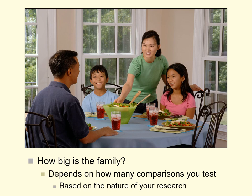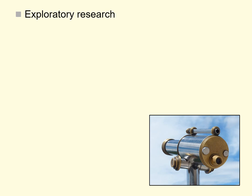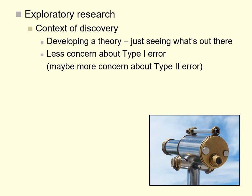The answer is: it depends on the nature of the research. Recall the distinction between exploratory and confirmatory research. Exploratory research is conducted in a context of discovery — where there isn't a good literature of previous findings or well-developed theories. We're looking to see what we can see, maybe trying to develop a theory. In that context, we may not be overly concerned about type 1 errors. We may be more concerned about missing a potential effect — a type 2 error, a false negative. So you may not really care much about the number of tests in your family.